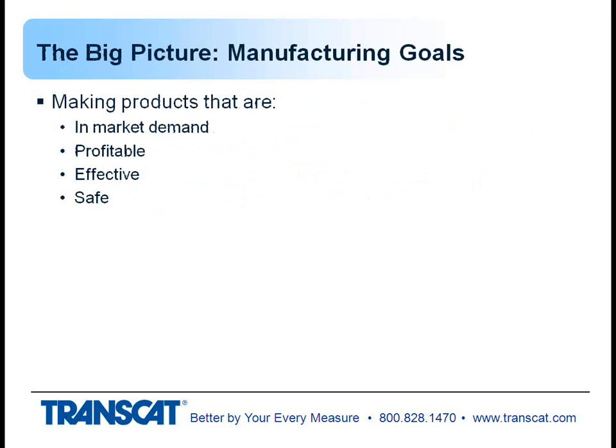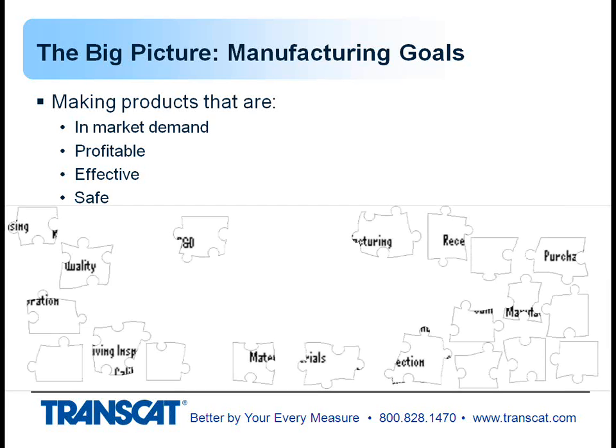Manufacturing goals — the big picture is to make products that are in market demand, because you want to sell them and if people don't want them you don't want to be in that type of product. Market demand is important. You want to be profitable, you want your product to be effective, and you want your product to be safe.